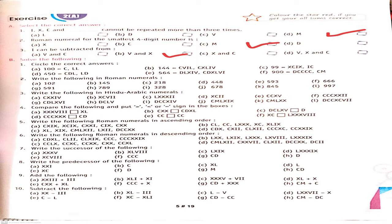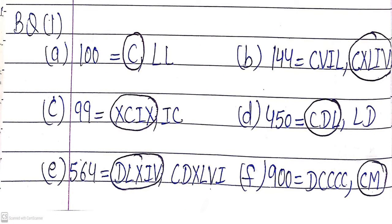Now Part V — solve the following; circle the correct answers. Part A: 100 — options are C and LL. We represent 100 as C, so we circle C. Part B: 144 — options given; 144 is written as CXLIV: C means 100, XL means 40, IV means 4. So we circle the second option.